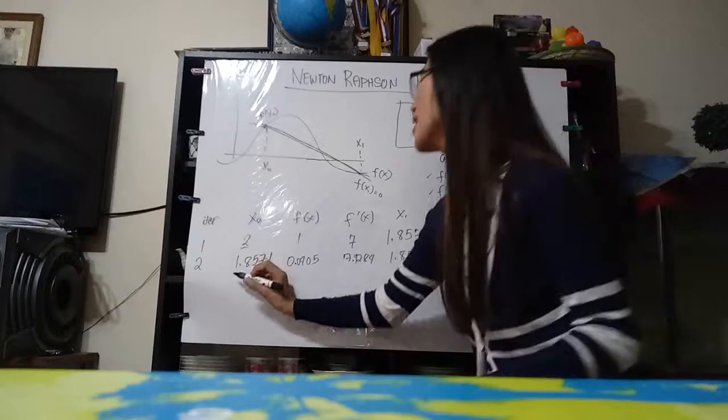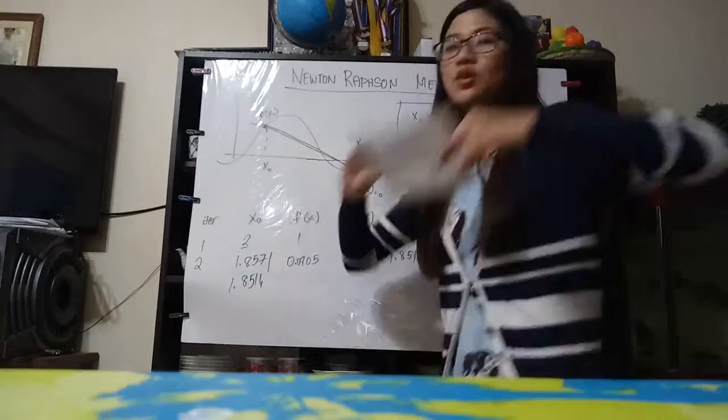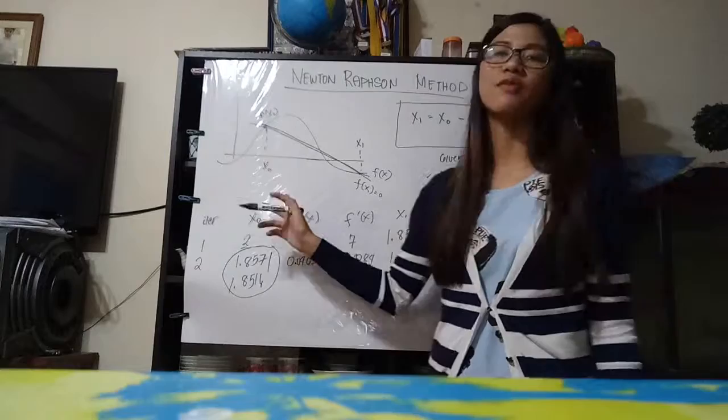So for our second iteration here, the value of x of 1, again, that would be the value of our x of 0, our new x of 0: 1.8516. So stop right there.